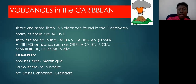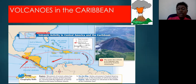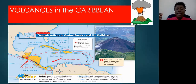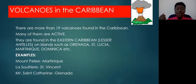Here is a map showing that at the edge of the Caribbean plate, there is a string of volcanoes in the Eastern Caribbean — those red triangles indicate a volcano. Many of those islands are volcanic. There are famous volcanoes in the Caribbean: Mount Pelée on the island of Martinique, La Soufrière on the island of St. Vincent, and Mount St. Catherine on the island of Grenada.